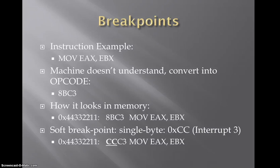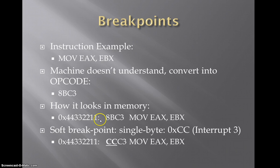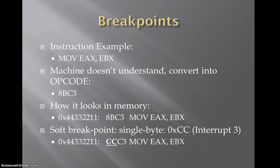Here's an example of an instruction: MOV EAX, EBX, which simply means move the contents of EBX into EAX. The machine doesn't understand this much like DNS — it needs to be converted to an opcode, which becomes 0x8BC3. So if we were looking at this in Immunity or a debugger at this memory location, we would see this opcode and then these instructions. If we want to set a soft breakpoint, all we need to do is set one byte of that opcode to 0xCC — that's interrupt 3. So we would see CC C3 at that memory location, and when the CPU reached that CC instruction, it would pause and create a breakpoint.